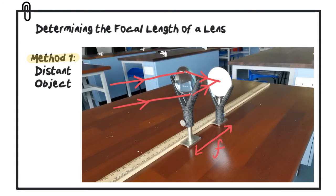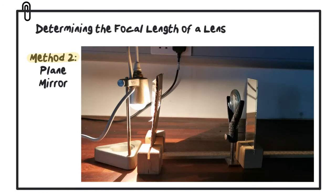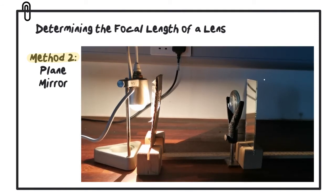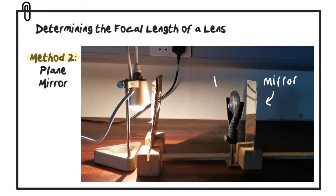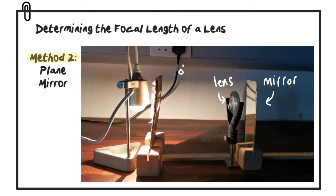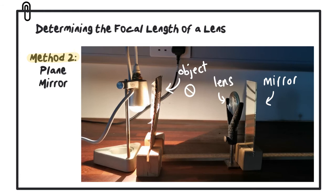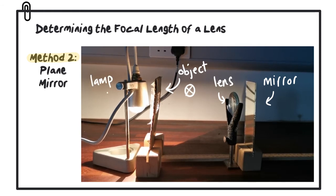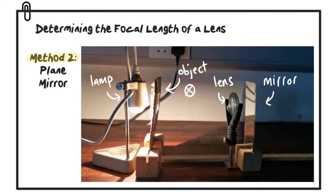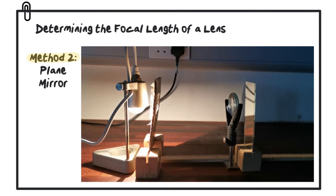The next method is called the plane mirror method. For this we need a plane mirror, a lens, an object, and a lamp. The object in this case is a small washer with a cross in the middle. We keep the mirror and lens very close together and move both at the same time.